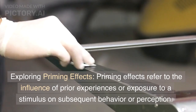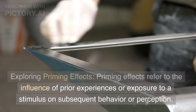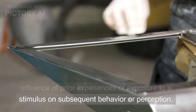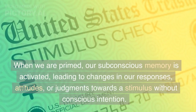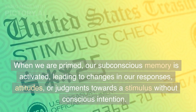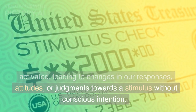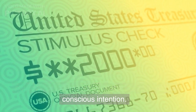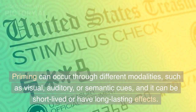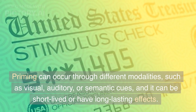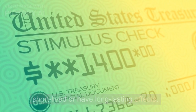Exploring Priming Effects. Priming effects refer to the influence of prior experiences or exposure to a stimulus on subsequent behavior or perception. When we are primed, our subconscious memory is activated, leading to changes in our responses, attitudes, or judgments towards a stimulus without conscious intention. Priming can occur through different modalities, such as visual, auditory, or semantic cues, and it can be short-lived or have long-lasting effects.